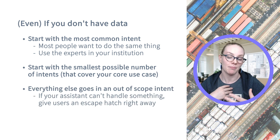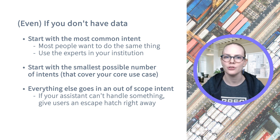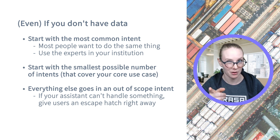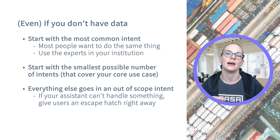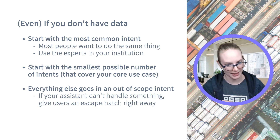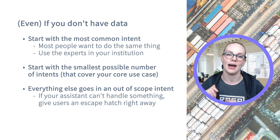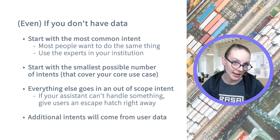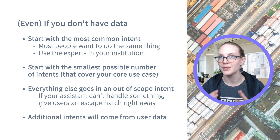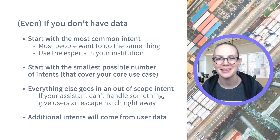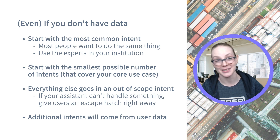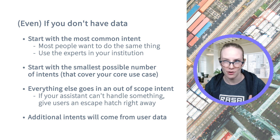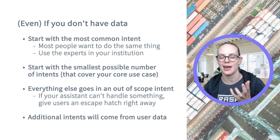Everything that somebody might want to say to your assistant that you can't currently handle — for example, an assistant that checks a bank balance but can't transfer money — put that in an out-of-scope intent so your assistant can identify that someone is asking for something it can't do and respond in a certain way, perhaps with a rule. Additional intents should come from user data. Users will always surprise you — you'll never be able to predict all the things they'll say. So use what they're actually saying to identify when you should add a new intent.